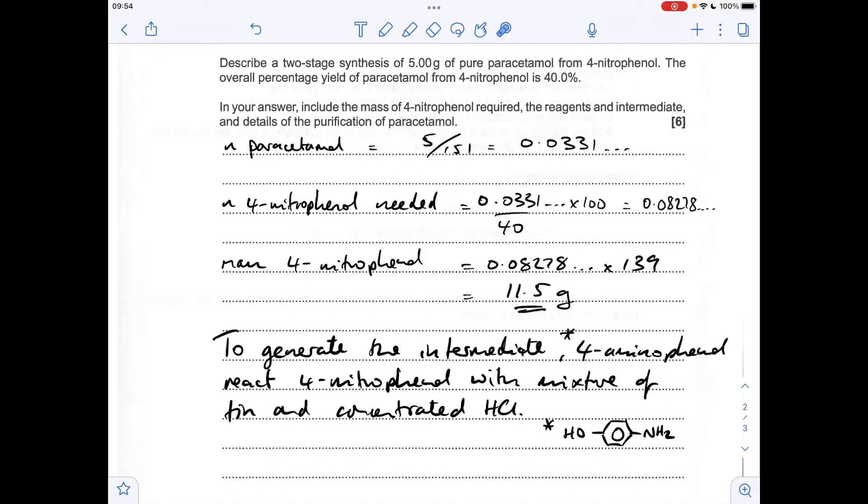So to generate the intermediate, the 4-aminophenol, or you could give the structure there, we're going to react the 4-nitrophenol with a mixture of tin and concentrated hydrochloric acid. And that's going to reduce the nitro group to the amino group.